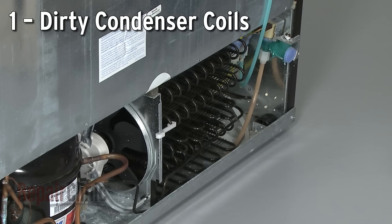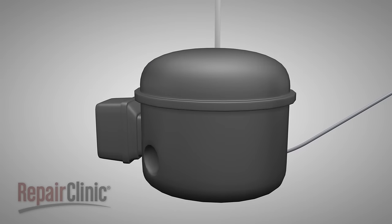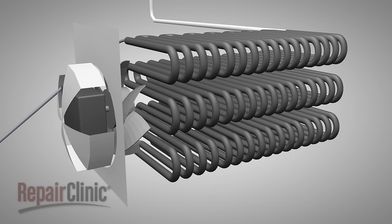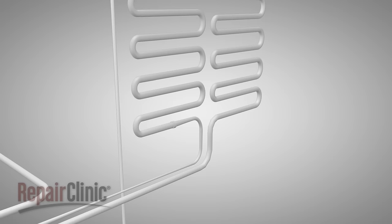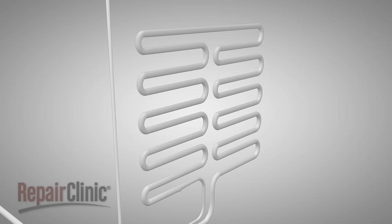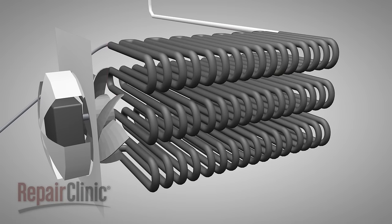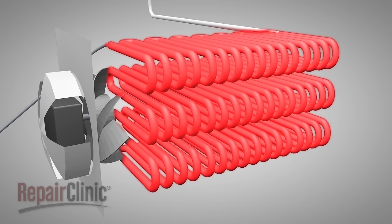To cool the air inside the compartments, refrigerators use a compressor to pump refrigerant through two different kinds of coils: the condenser coils, usually located at the bottom of the appliance, and the evaporator coils, normally found behind the rear panel. The refrigerant in gas form is first pumped into the condenser coils, where the gas is condensed into a hot liquid. The condenser coils dissipate the heat as the liquid travels through them.